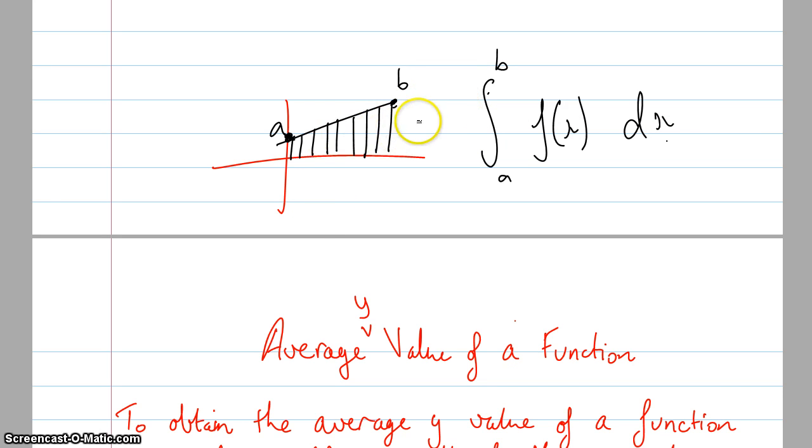But then what we need to do to find out the average one, we actually need to divide by the number of y values. And the way to do that is to divide by the number of x values that make the y values, which would be whatever b minus a is. We'll do all of this bit here divided by b minus a, or instead you can use this formula here.